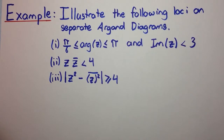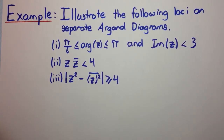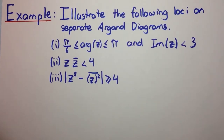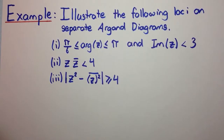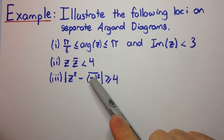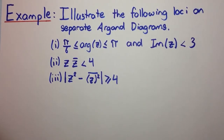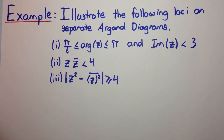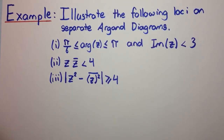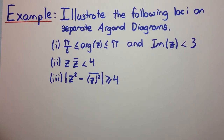Part 1: π/6 ≤ arg(z) ≤ π, and the imaginary part of z is less than 3. Part 2: z times z̄ is less than 4. And Part 3: the modulus of z² minus the conjugate of z² — so this is the conjugate of z squared — and the modulus of this is greater than or equal to 4.